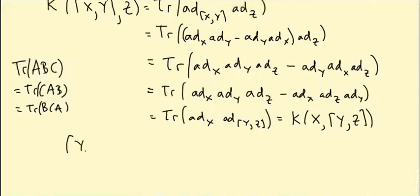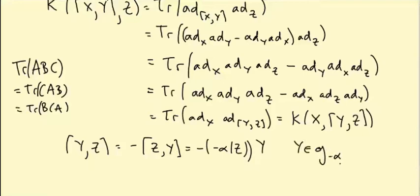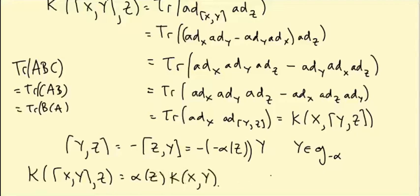What is Z? Remember we're trying to prove that X bracket Y is a multiple of alpha sharp. Alpha sharp is defined in terms of its killing form in a product with any element of little h, so we're interested in Z being an element of little h here. So Y bracket Z is minus Z bracket Y because the Lie bracket is anti-symmetric, and because Z is in little h this is equal to minus the weight of Y evaluated on Z times Y. In other words, Y is in little g minus alpha, so it's a weight vector for the action of little h. So Z is in little h so it acts and the eigenvalue is minus alpha of Z. So K X bracket Y Z equals minus minus alpha of Z times K X bracket Y and that's what we wanted to prove.